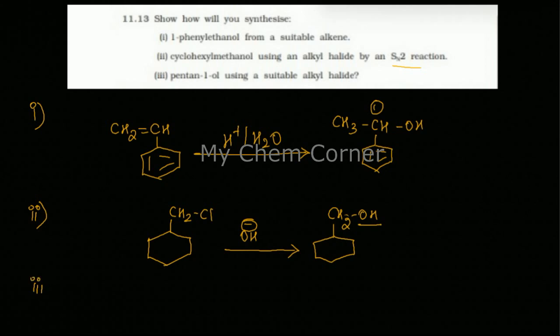Now last one, the third one is you need to prepare pentin-1-ol using suitable alkyl halide. Same way here, pentin-1-ol is a 5 carbon chain with an OH group on the first carbon. So I am drawing the pentin-1-ol.